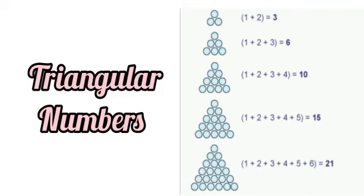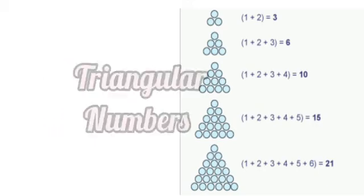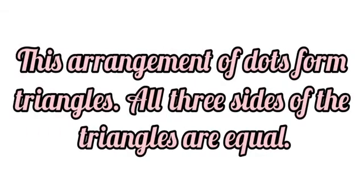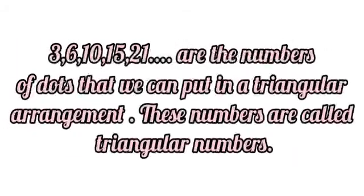In the fourth figure, 1+2+3+4+5=15. In the next figure, 1+2+3+4+5+6=21, and so on. These arrangements of dots form triangles. 3, 6, 10, 15, and 21 are the numbers of dots that we can put in a triangular arrangement.